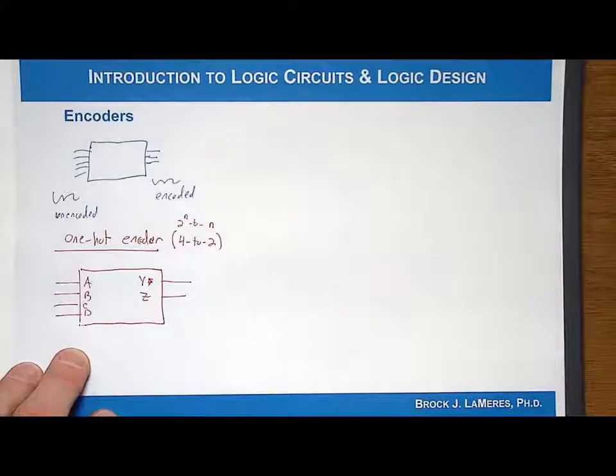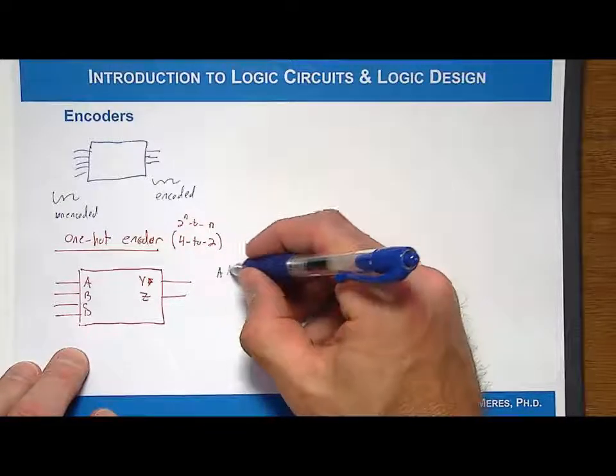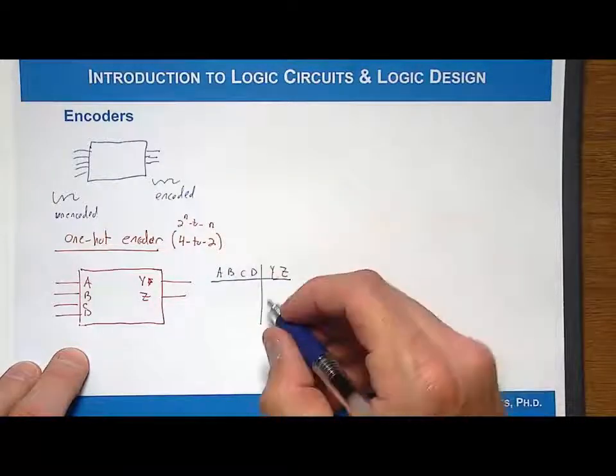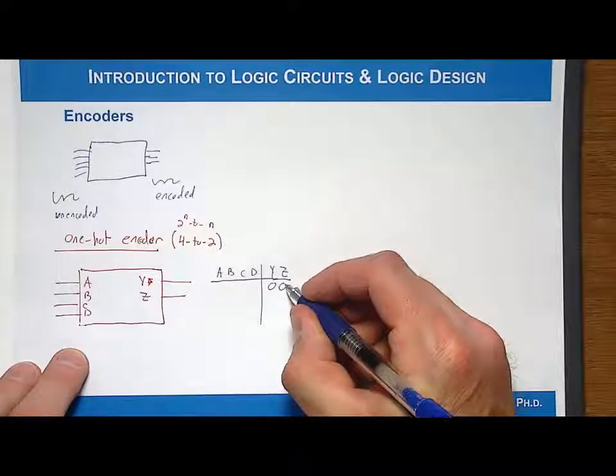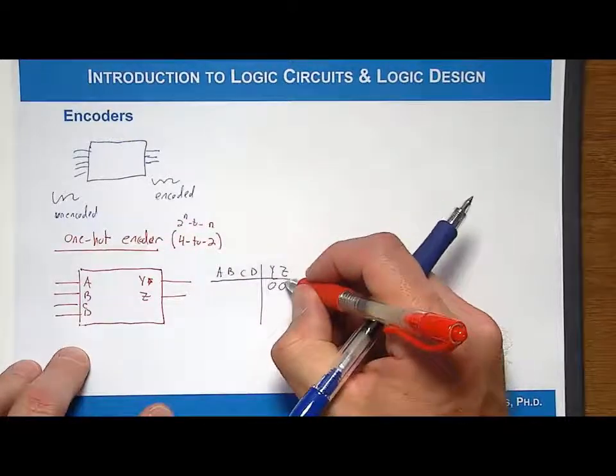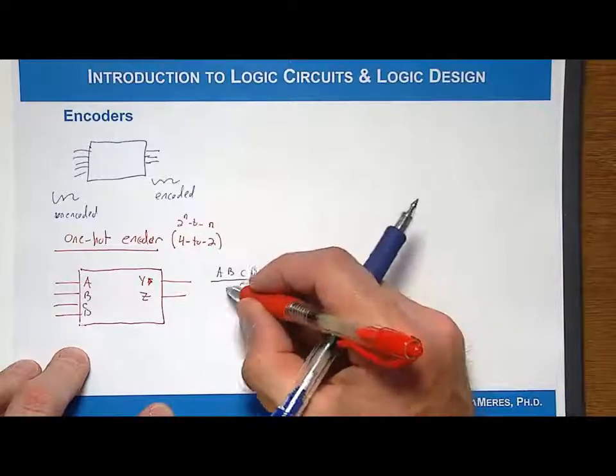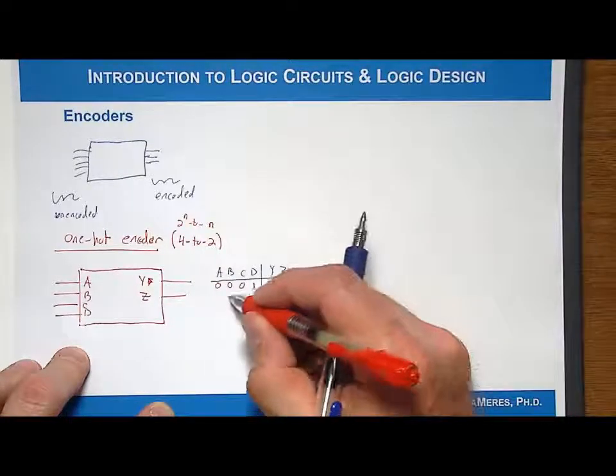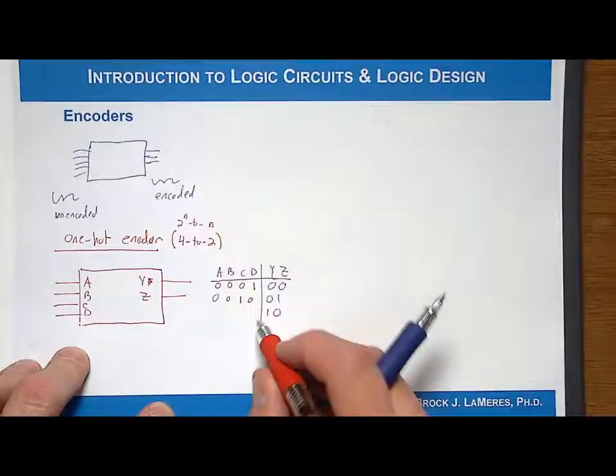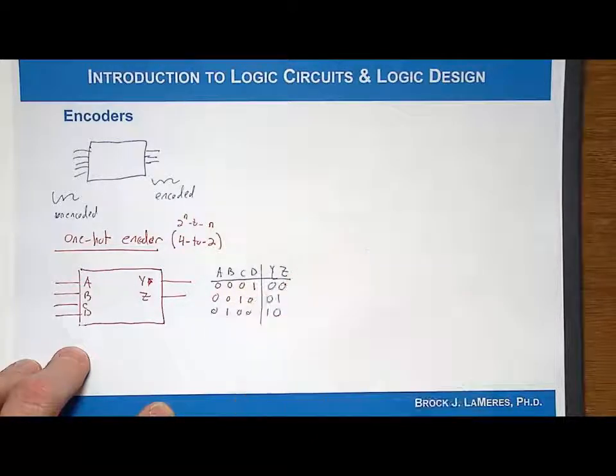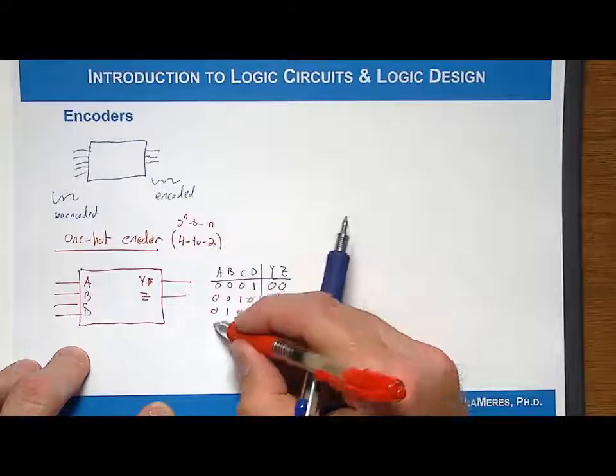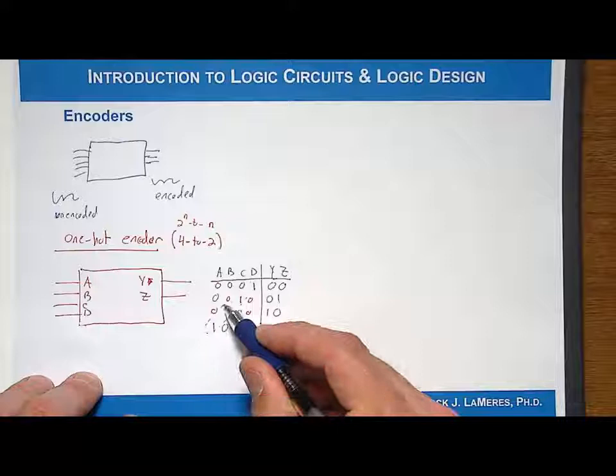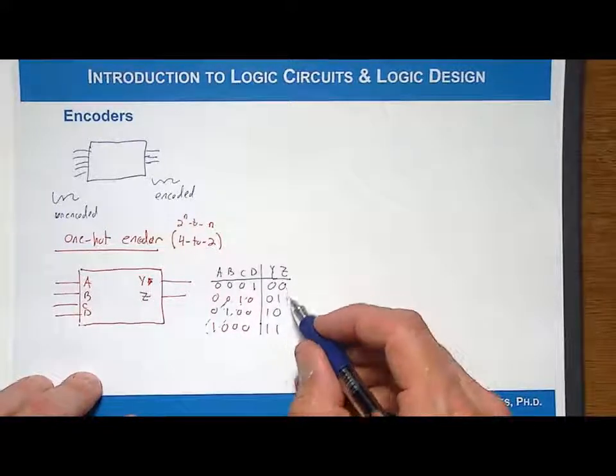The behavior is as follows. We're going to list A, B, C, and D, then the behavior of Y and Z. We'll produce an output encoded as 0,0 when one and only one input is asserted. Output 0,0 occurs when input D is asserted but no others. Output 0,1 when C is asserted, output 1,0 when B is asserted, and output 1,1 when A is asserted. This is the truth table, and you can see the pattern of signals being asserted corresponds to creating these outputs.